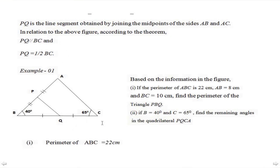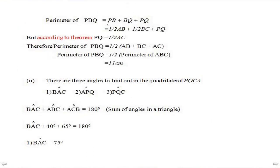I am going to solve Part 1 of the example. The perimeter of triangle ABC is given as 22 cm. The perimeter of triangle PBQ can be written as PB plus BQ plus PQ, which can also be written as half of AB plus half of BC plus PQ.